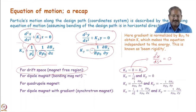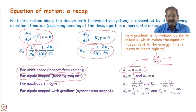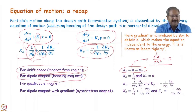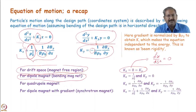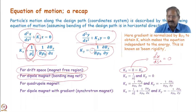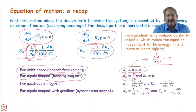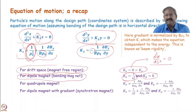In the dipole magnet, the curvature-related part will be present. In the horizontal plane, K = 1/ρ² plus the gradient-related part. However, for a pure dipole magnet with no gradient, Kx consists of only 1/ρ₀². In the vertical plane of a pure dipole magnet, there is only a contribution from the gradient part in K, and since we assume no gradient is present, Ky will be zero in a pure dipolar magnetic field.